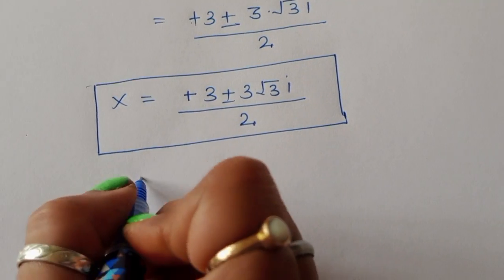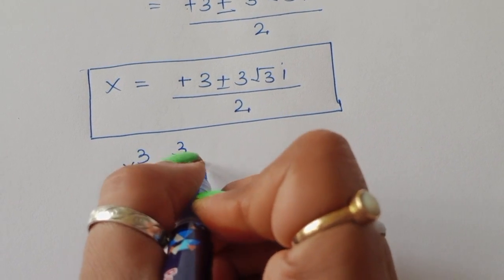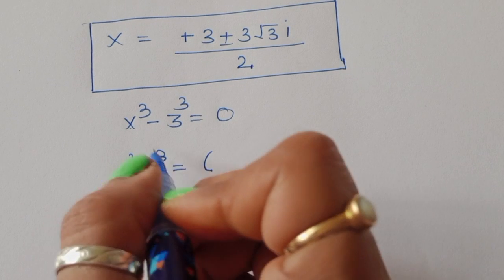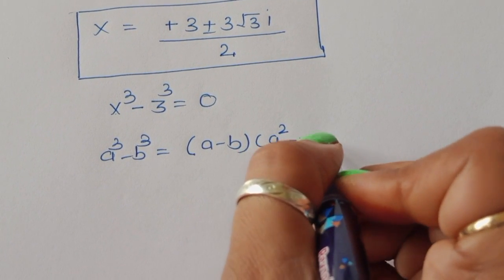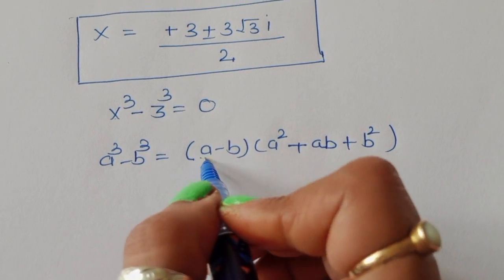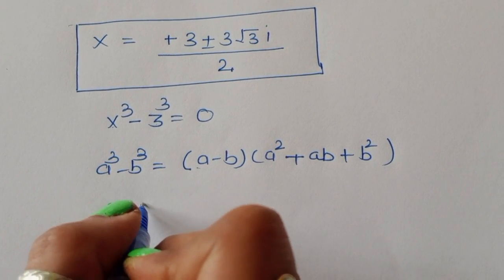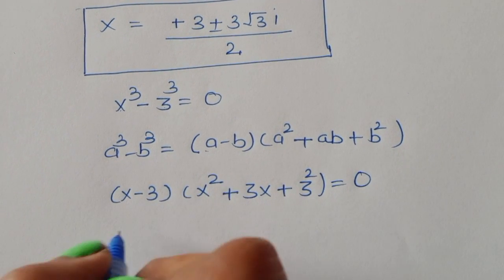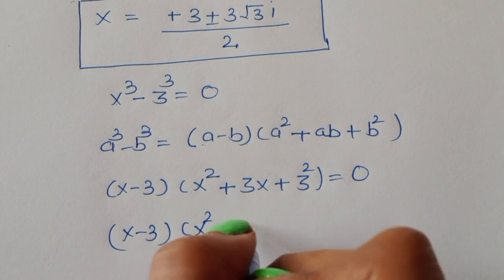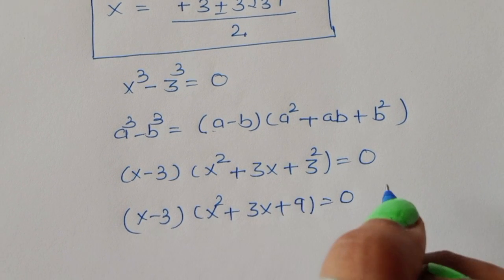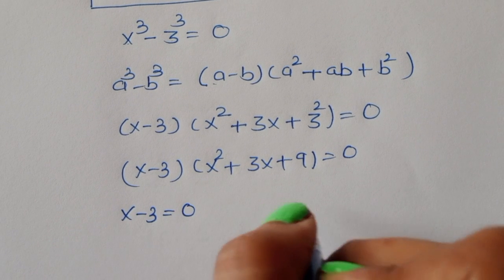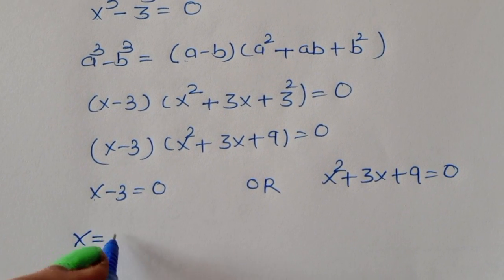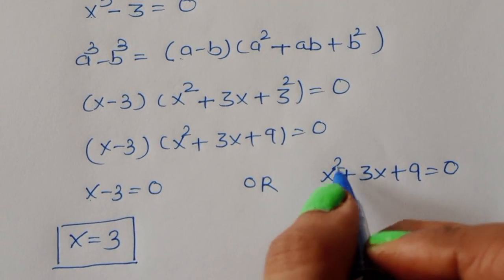Now for the second equation, x³ - 3³ = 0, which is the form of a³ - b³. The formula is a³ - b³ = (a - b)(a² + ab + b²). Applying this: (x - 3)(x² + 3x + 9) = 0. So x - 3 = 0 gives x = 3, and the second factor is x² + 3x + 9 = 0.